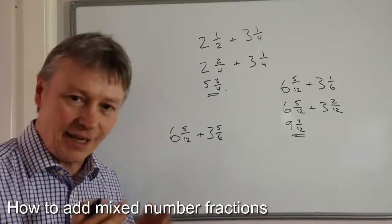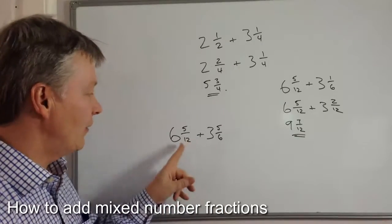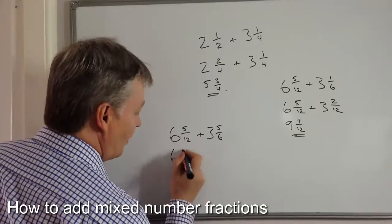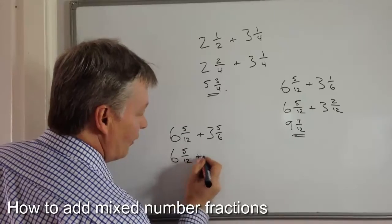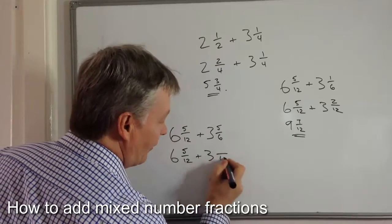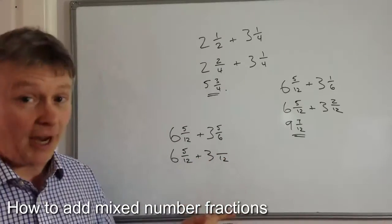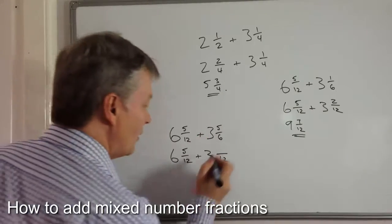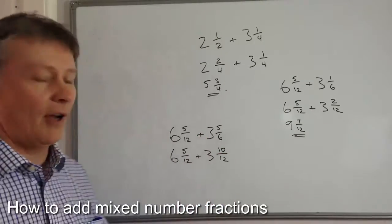So same principles to begin with in that we have to make these bottom numbers exactly the same. So it's going to be six and five over twelve plus three and something over twelve. Same again, I've multiplied that by two. So I'm going to multiply the top by two. And I get ten over twelve.